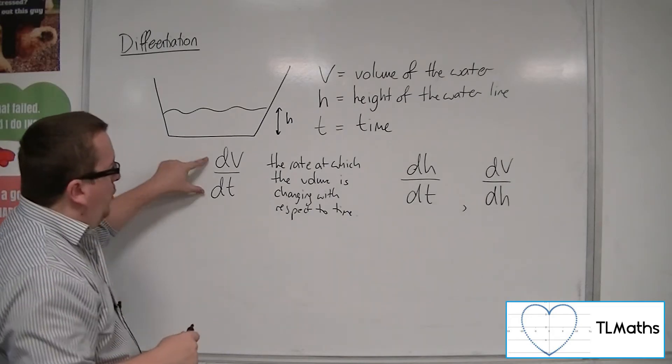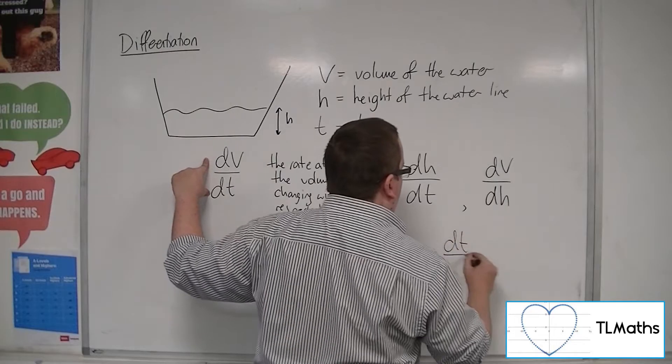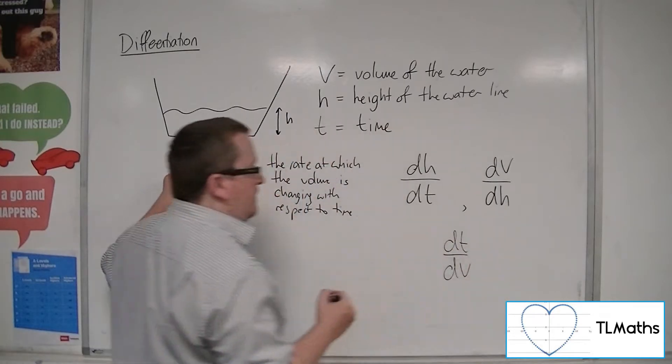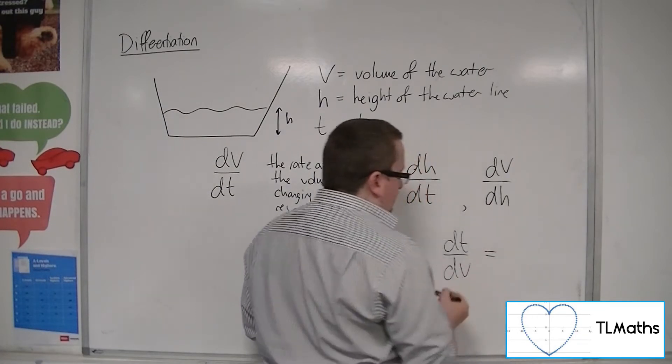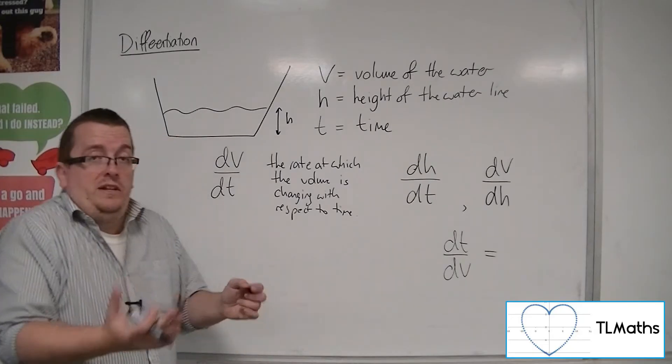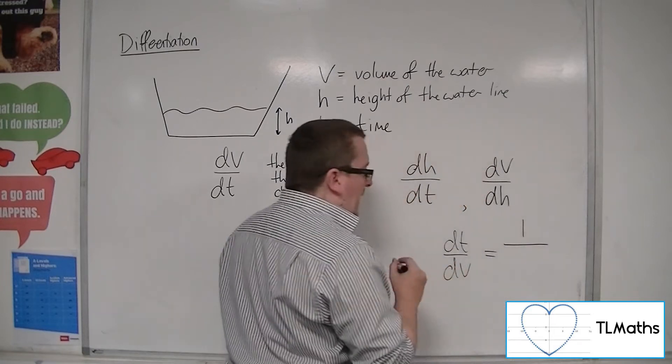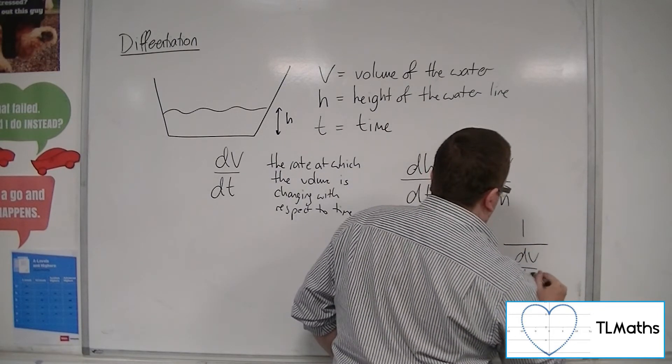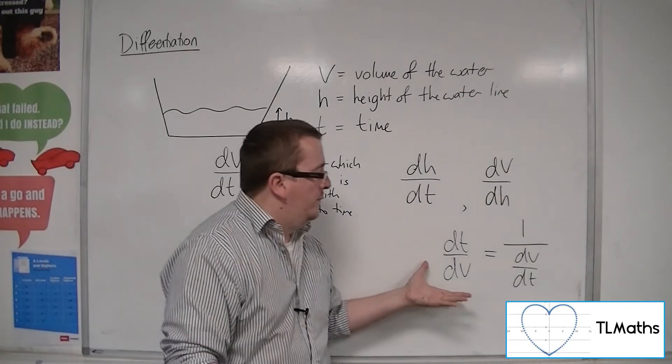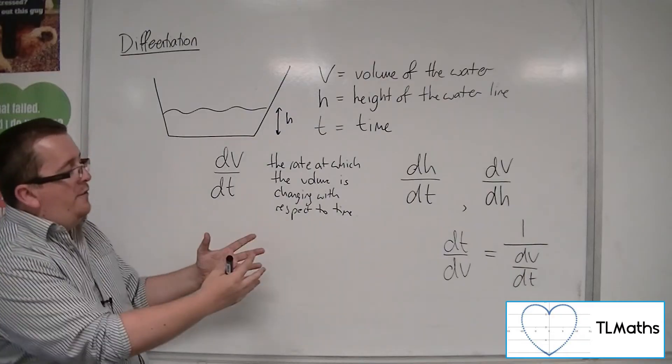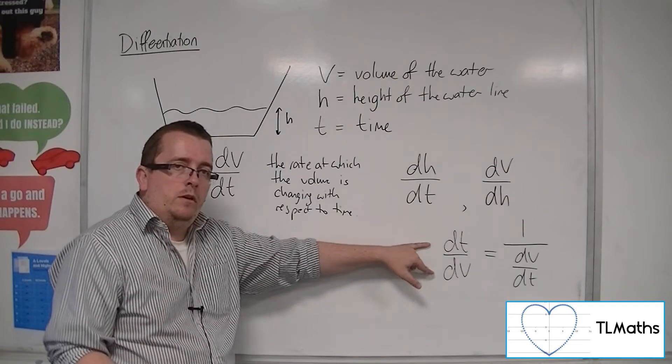Now it is important to note, however, that if you had dT/dV as part of your equation, it is useful to know that this is the same as 1 over dV/dt. So this is another example of where we have the derivative, the rate of change, working like a fraction.